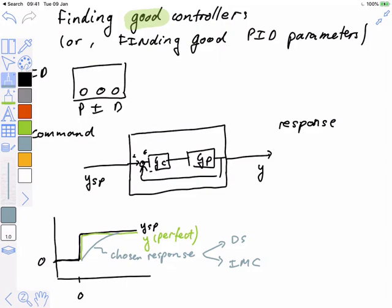The IMC process splits the plant model into an invertible and a non-invertible part, which means that by just following the steps, we immediately get a physically realizable controller automatically — whereas in direct synthesis you may have had to guess a couple of times. Both methods have the property that we know and choose the closed loop response. IMC also formalizes the dead-time rule: we only try to invert the part we can invert; we don't try to invert bad poles or dead time because that obviously would not work.